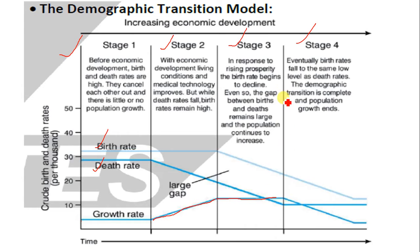Then in stage four, eventually birth rate falls to the same low level as death rate. As a result, the growth rate also begins to drop because the population growth rate is now low. In stage one, birth and death rates are both high; but in stage four, birth and death rates are both low. So population growth is low in both stages — but for opposite reasons.